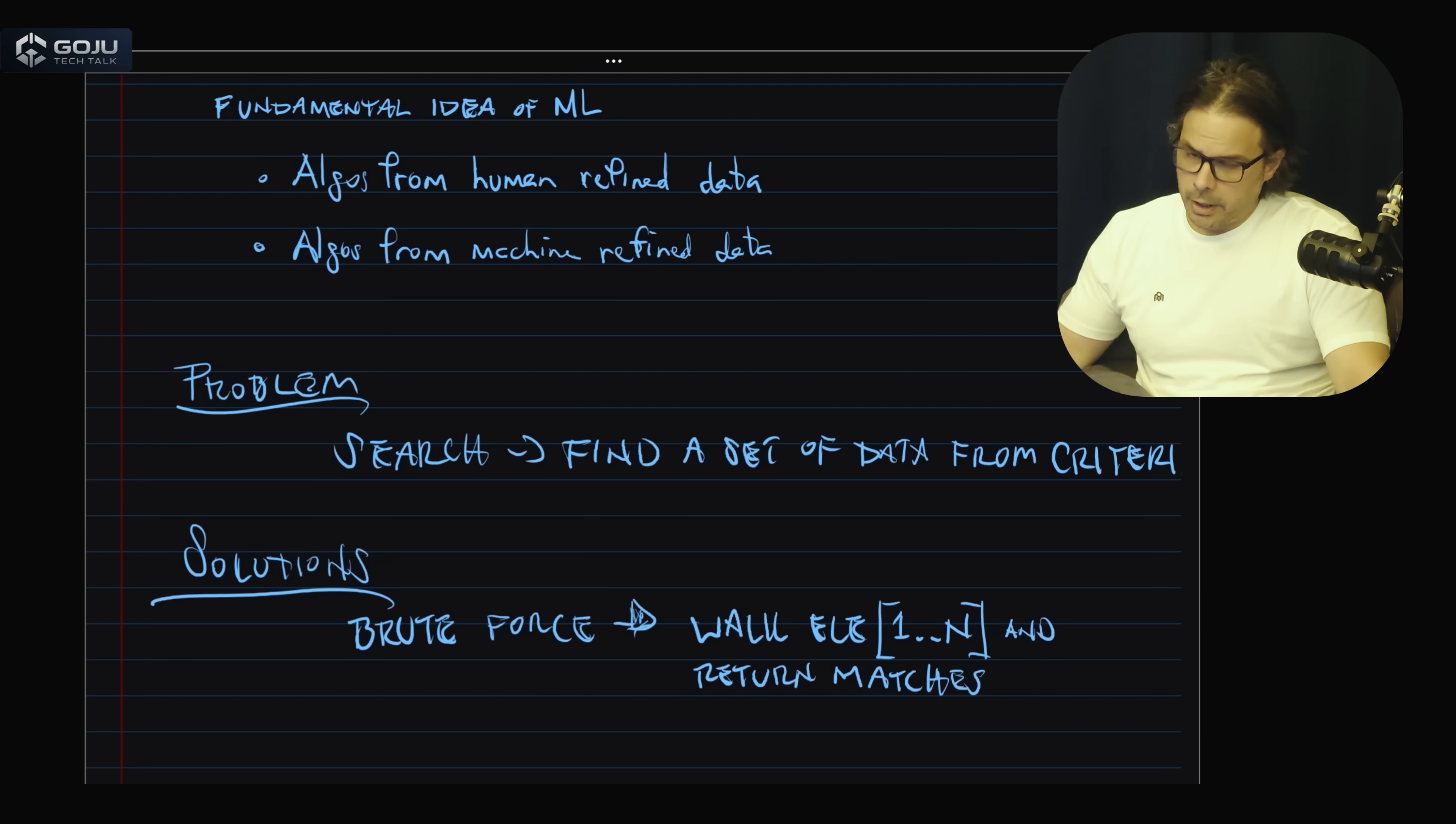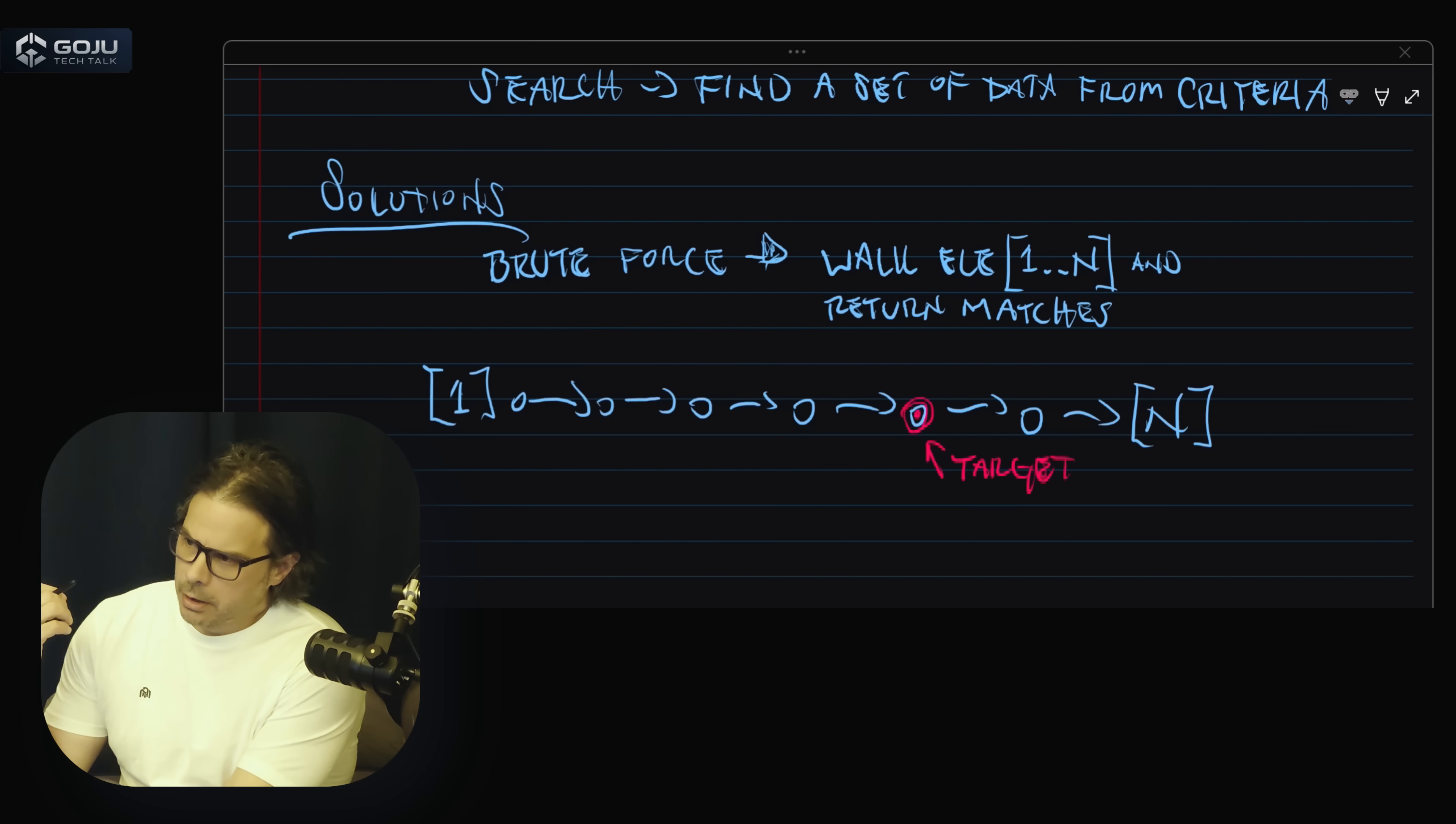And in particular, if the element or elements that we're looking for are near the end. So essentially, the amount of compute required is linearly proportional to the size of the set. So this is, if we get into kind of nerd terms, this has O of n computational complexity.